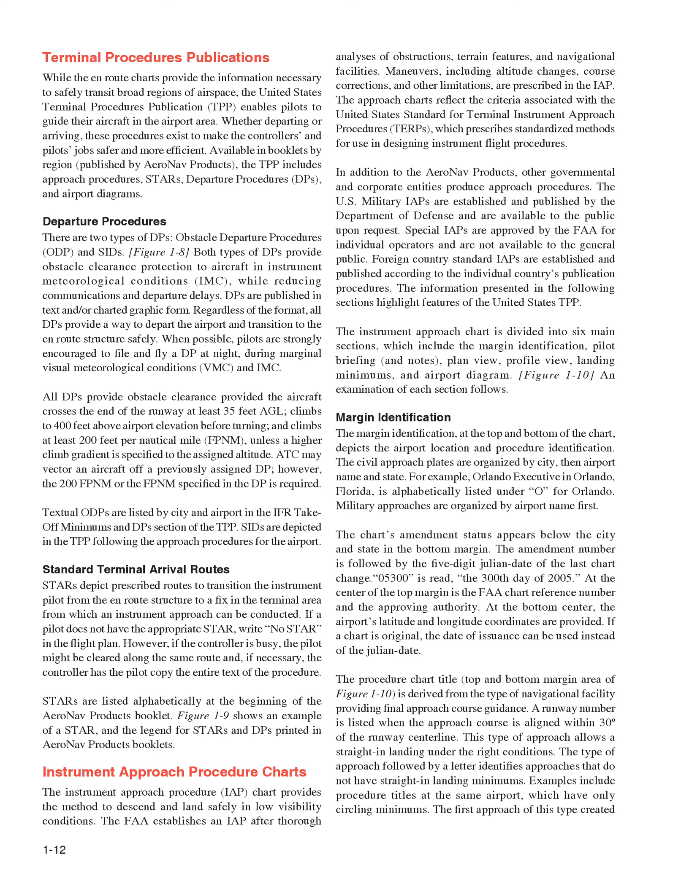Terminal Procedures Publications: while on-route charts provide the information necessary to safely transit broad regions of airspace, the United States Terminal Procedures Publication, TPP, enables pilots to guide their aircraft in the airport area. Whether departing or arriving, these procedures exist to make the controllers' and pilots' jobs safer and more efficient. Available in booklets by region, published by AeroNav Products, the TPP includes approach procedures, STARs, departure procedures, DPs, and airport diagrams. There are two types of DPs: obstacle departure procedures, ODP, and SIDs. Both types of DPs provide obstacle clearance protection to aircraft in instrument meteorological conditions, IMC, while reducing communications and departure delays. DPs are published in text and/or charted graphic form. All DPs provide a way to depart the airport and transition to the on-route structure safely.